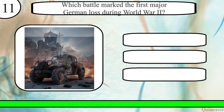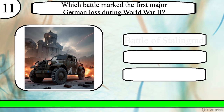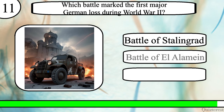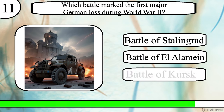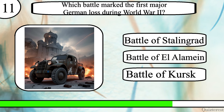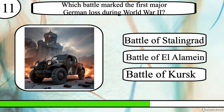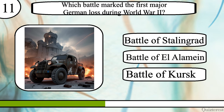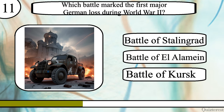Question 11. Which battle marked the first major German loss during World War II? Battle of Stalingrad, Battle of El Alamein, or Battle of Kursk?